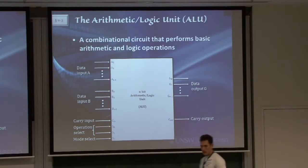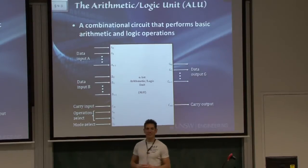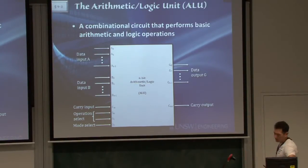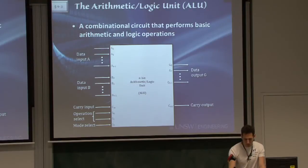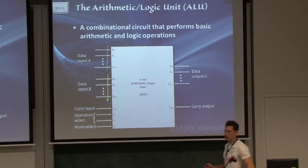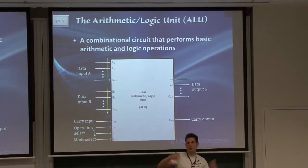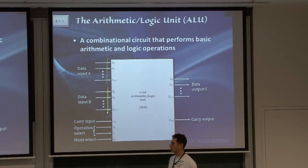So overall, the ALU, the arithmetic logic unit, essentially takes two numbers, two vectors, A and B. They can be as many bits as you want them. In our case, we're just talking about generic n bits. In today's computers, we're talking about 32 bits, 64 bits.